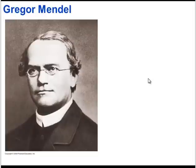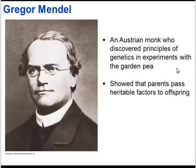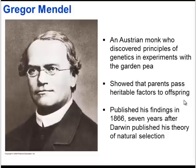A Mendelian inheritance pattern is an inheritance pattern that was observed by Gregor Mendel, a very famous biologist. He was an Austrian monk who discovered some principles of genetics while doing experiments with his garden peas. He showed that parents could pass factors on to their offspring. His findings were published in 1866, only a few years after Darwin published his theory of natural selection.